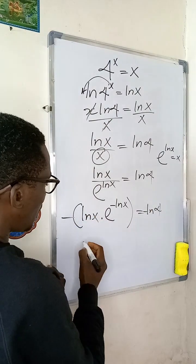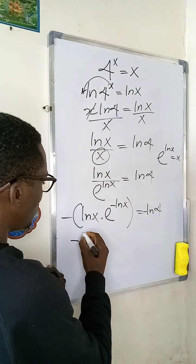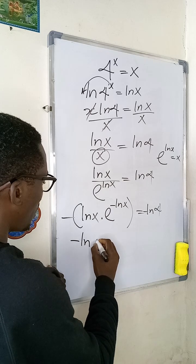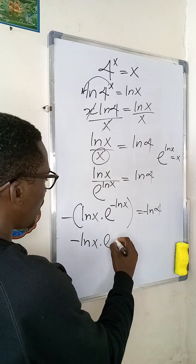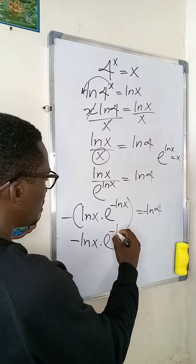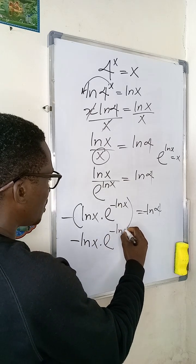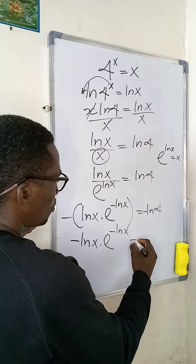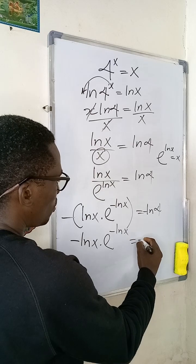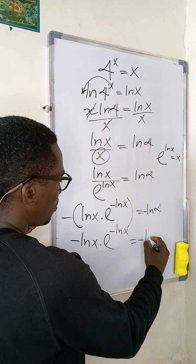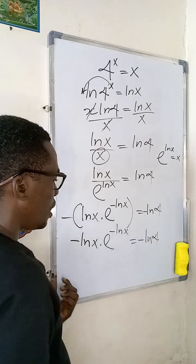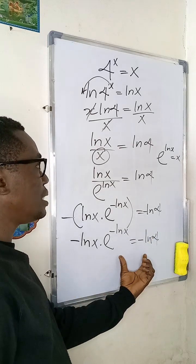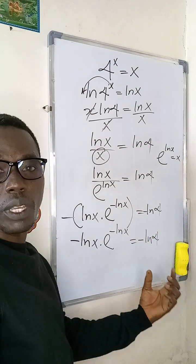Now I'll multiply both sides by negative one. That gives me negative ln(x) multiplied by e to the power of negative ln(x), equal to negative ln(4). The reason I did this is to be able to apply the Lambert W function.